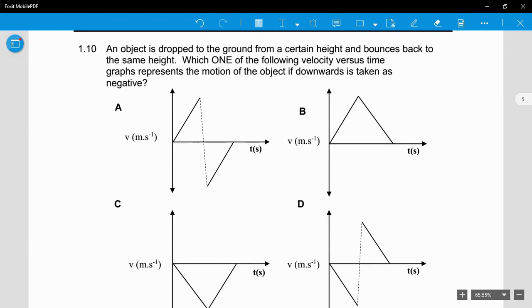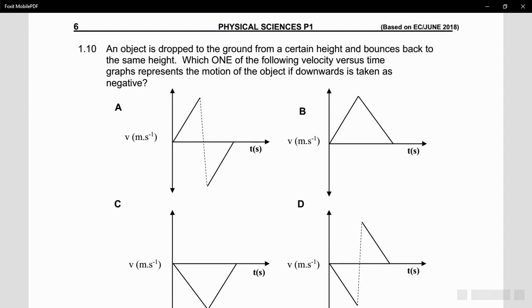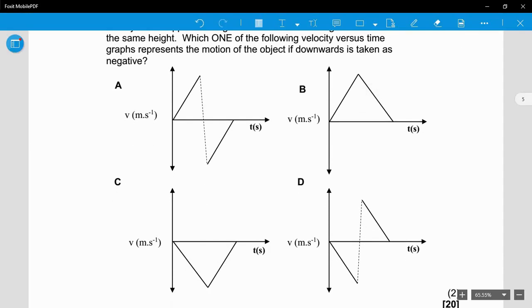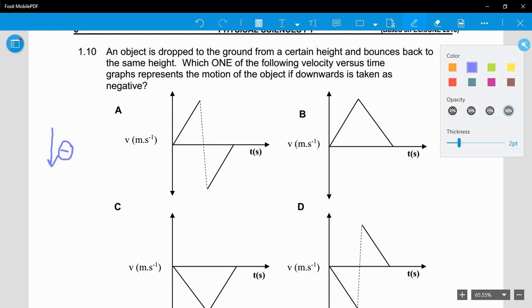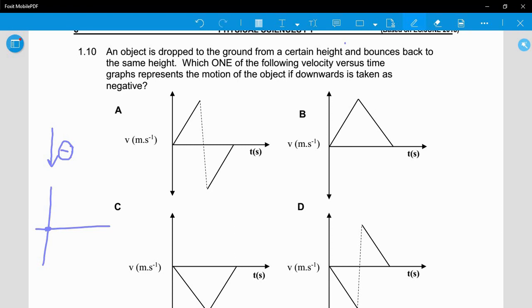Question 1.10: An object is dropped to the ground from a certain height and bounces back to the same height. Which one of the following velocity versus time graphs represents the motion if downwards is taken as negative? The object is dropped from a certain height, so it starts at zero. Downwards is negative, so it's going down - it goes more and more negative until it hits the ground at some point. Let me draw a picture here. It's dropped here, initially when it starts there's zero velocity. It goes down and has a maximum negative velocity here. At this point when it's going back up, it must have a maximum velocity because the velocity over here is going to be zero again.